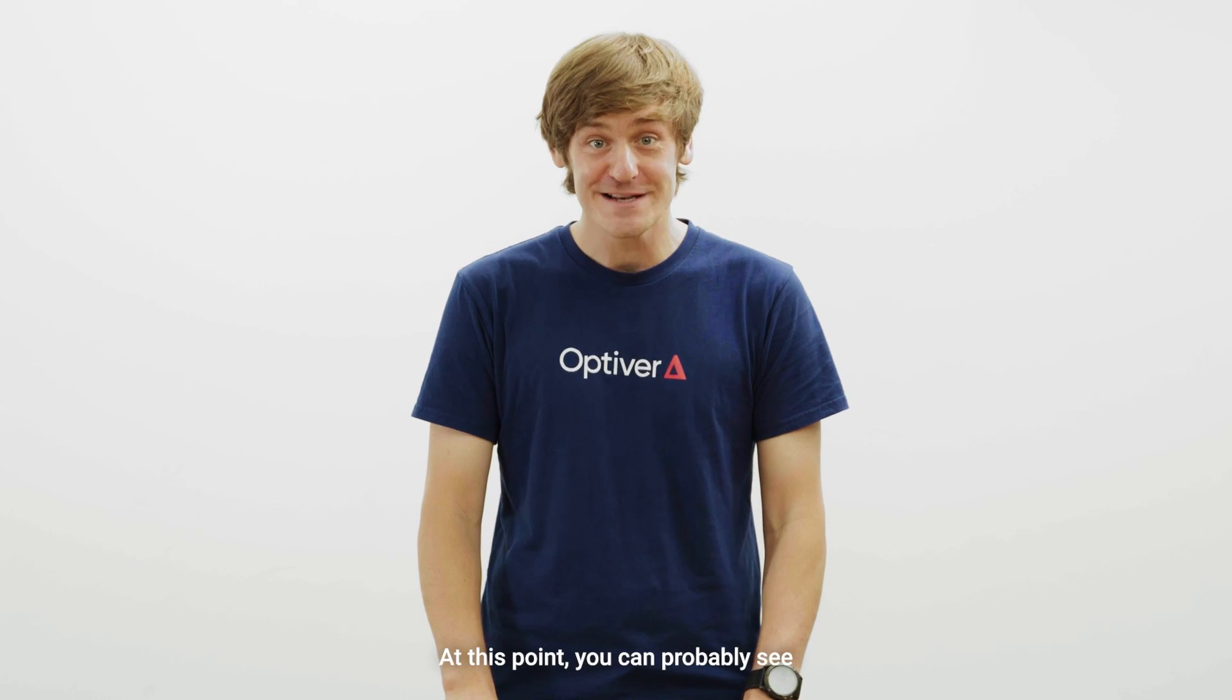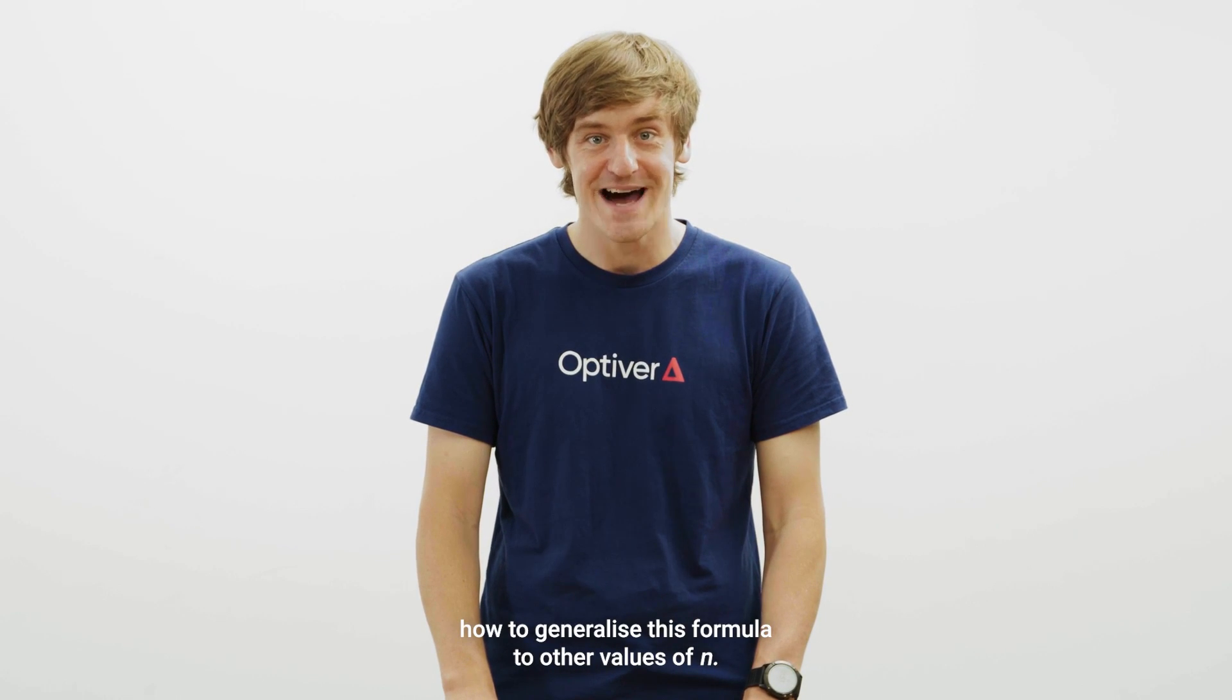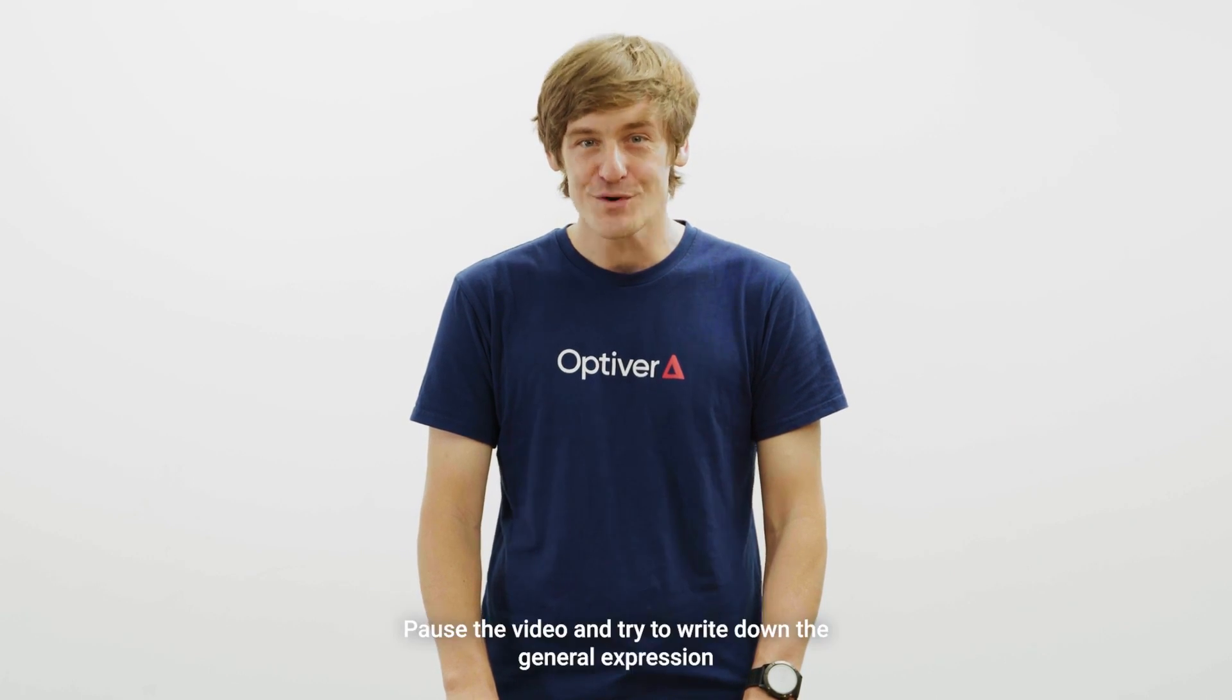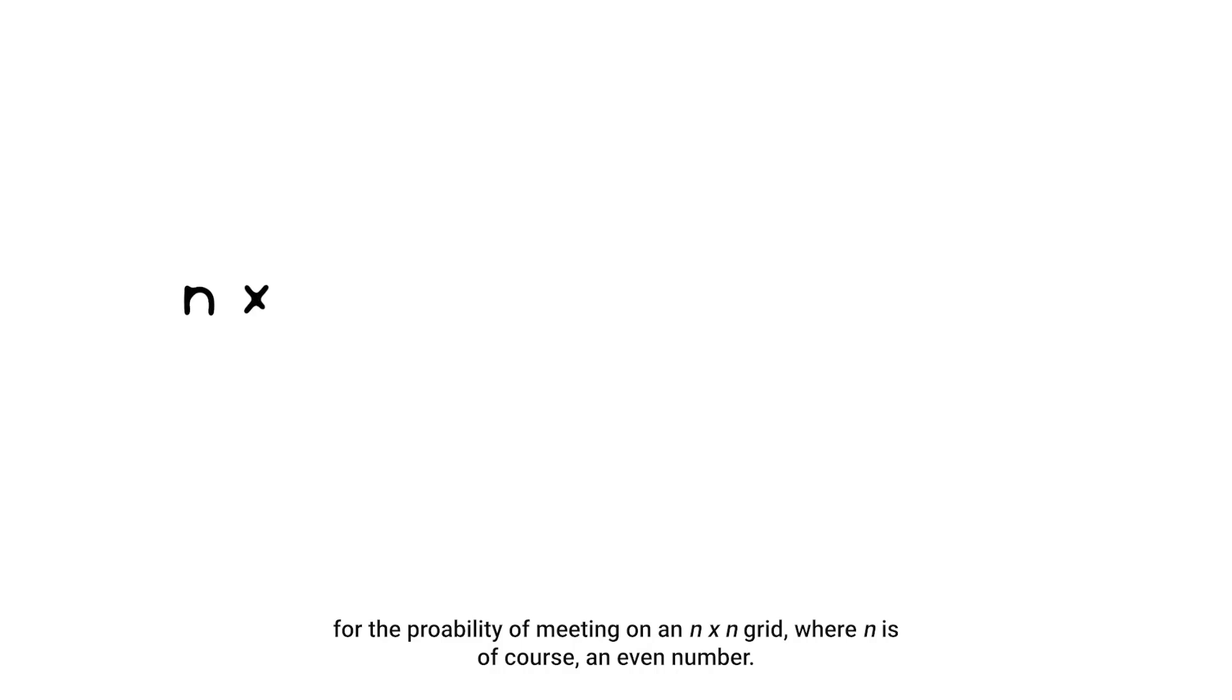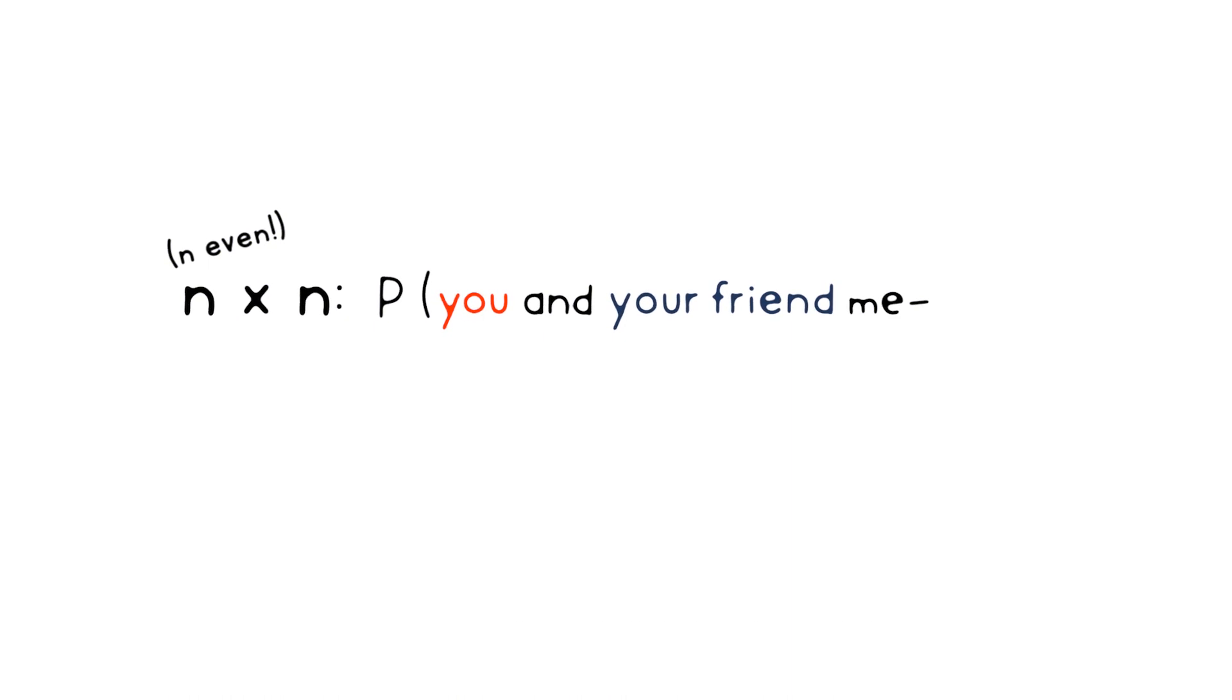At this point, you can probably see how to generalize this formula to other values of n. Pause the video and try to write down the general expression for the probability of meeting on an n-by-n grid, where n is, of course, an even number. The answer is 1 on 2 to the power of 2n multiplied by the summation of n choose i squared as i ranges from 0 to n.